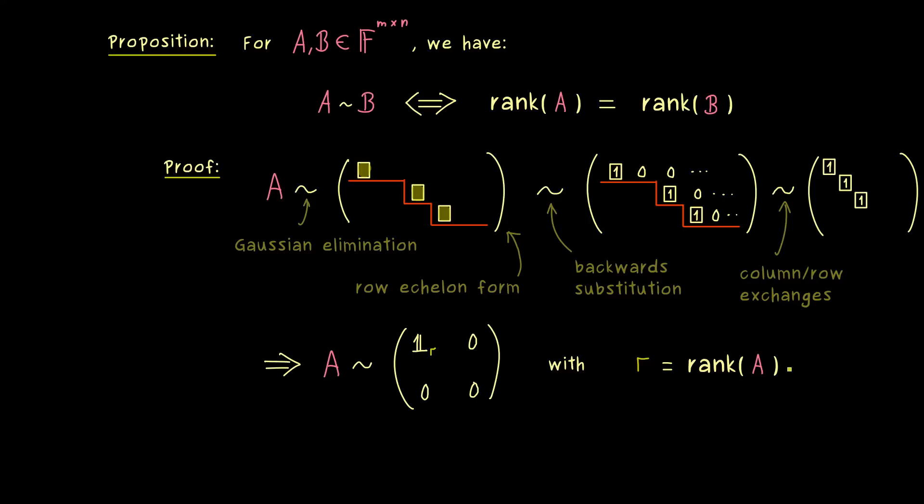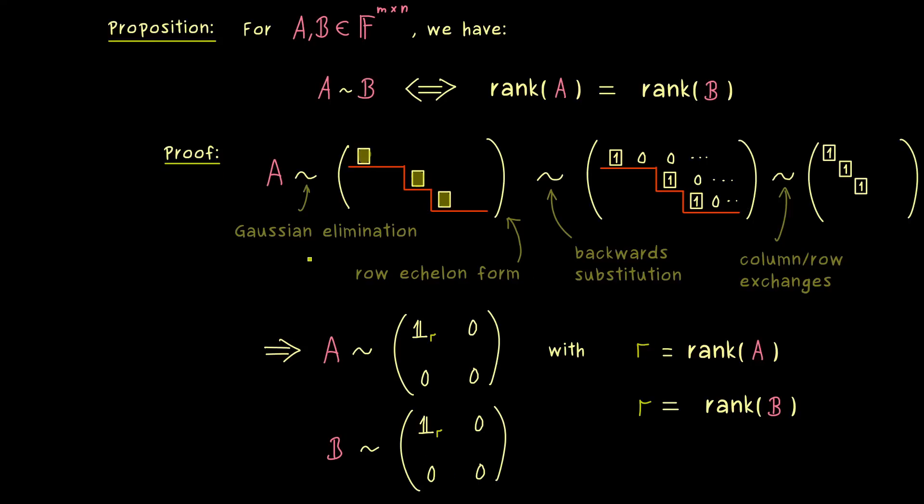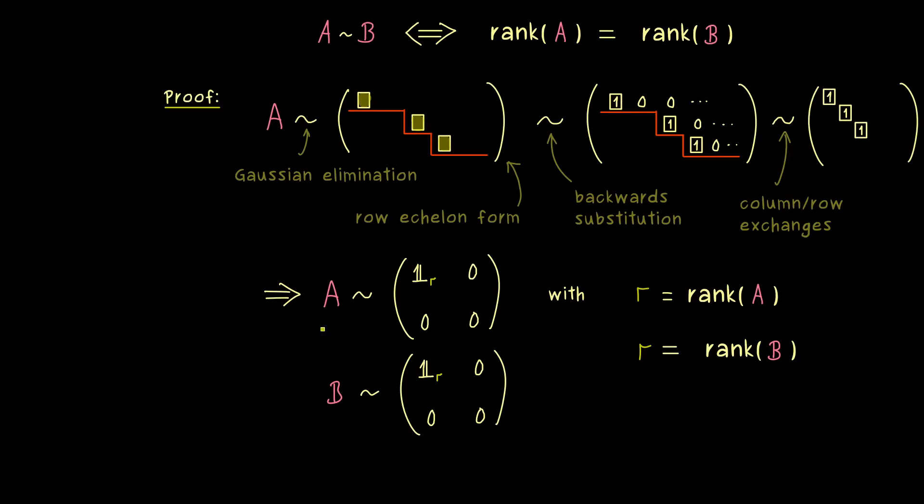And there we see it, if our matrix B has the same rank as A, we can do similar transformations to reach this form in the end for B as well. So we get that B is equivalent to the same matrix, and by the transitive rule of an equivalence relation we get that A is equivalent to B as well. And there we have it, the rank of a matrix completely describes the equivalence transformation.